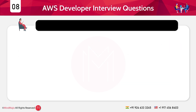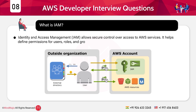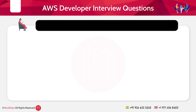Question 8: What is IAM? Answer: IAM, or Identity and Access Management, allows secure control over access to AWS services. It helps define permissions for users, roles, and groups, and ensures the principle of least privilege is followed.